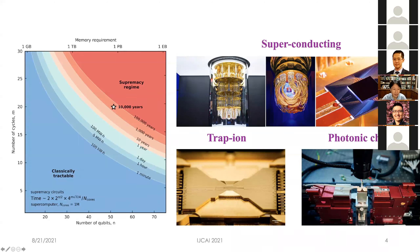Several current prototypical quantum devices are shown here. The three mainstream hardware platforms are trapped ions, superconducting quantum devices, and optical quantum computers. These are the leading platforms in quantum computing.